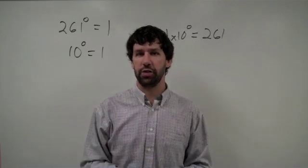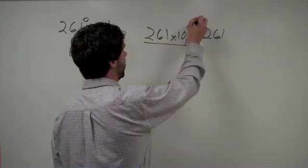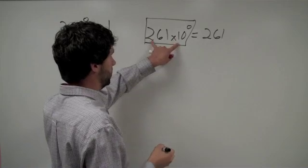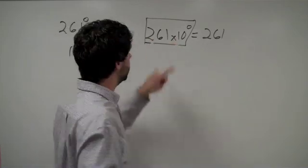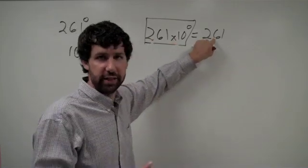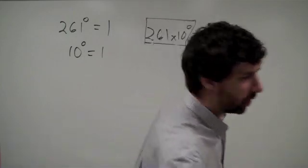It's very important in scientific notation that you realize even though we're writing it differently, we're writing the number this way, maybe, or in some other way, it's still the same number. It still equals that same value. So that's pretty important.